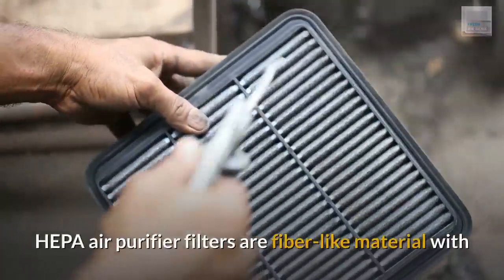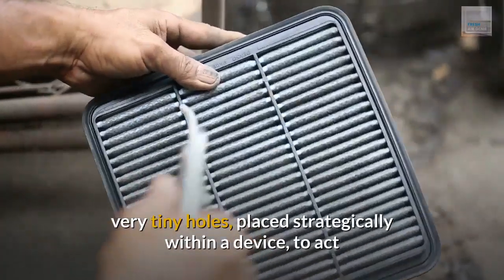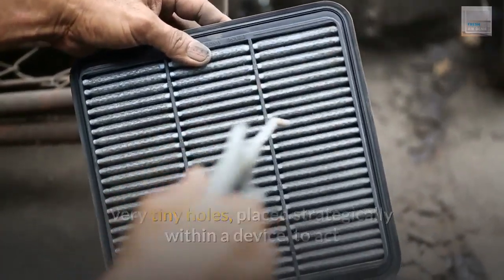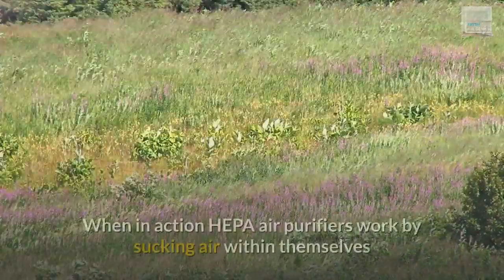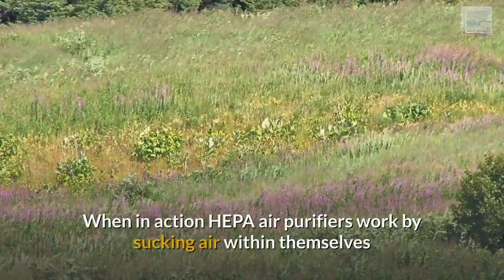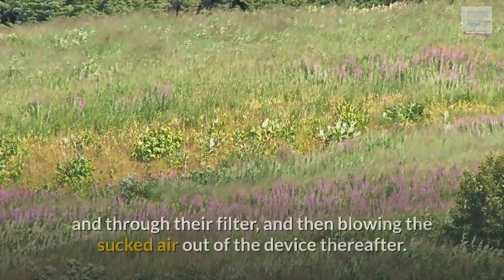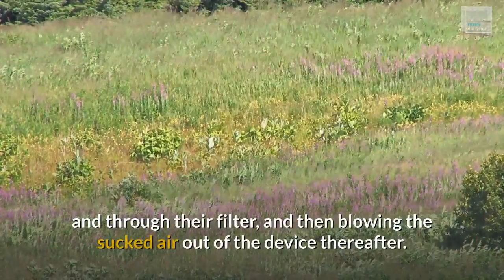HEPA air purifier filters are fiber-like material with very tiny holes, placed strategically within a device, to act as a sieve and hold back air pollutants that are bigger than these holes. When in action, HEPA air purifiers work by sucking air within themselves and through the filter, and then blowing the sucked air out of the device thereafter.